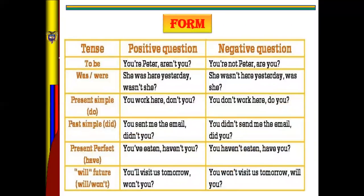Look at this chart and pay attention: what is the tense, what is the affirmative sentence, and what is the negative question tag? For tense 'to be' — present simple you say 'do' or 'does', past you use 'did', present perfect 'have', and in the future you say 'will' or 'will not'. Please be careful with this chart.